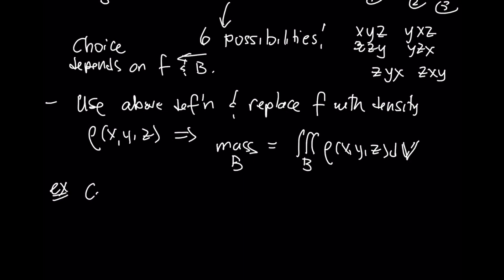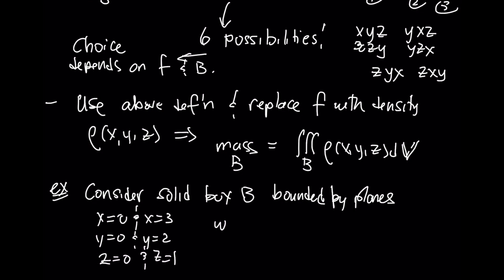As a very simple example, let's talk about a solid box B bounded by the planes x equals 0 and x equals 3, y equals 0 and y equals 2, z equals 0 and z equals 1. We have a density in this box of 2 minus z. So let's find the mass of the box.